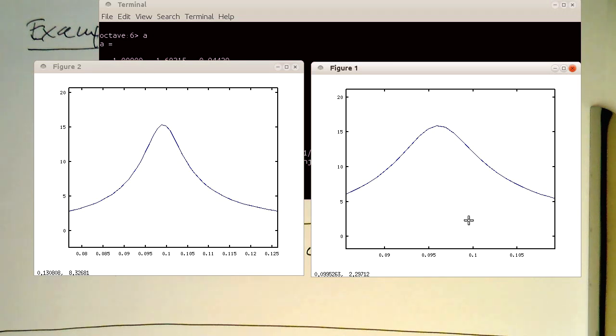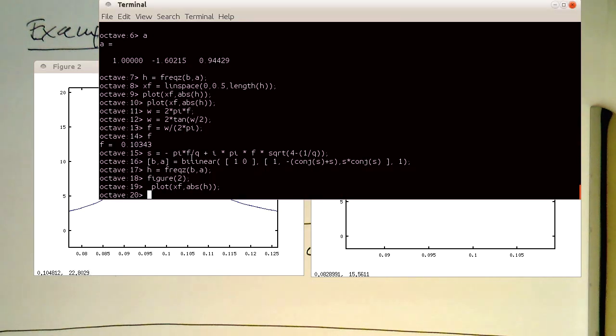So here we had a, we had our peak here at roughly 0.095. So here the peak is nearly at 0.1. So the pre-warping has moved the peak here to the right position, to the right position.